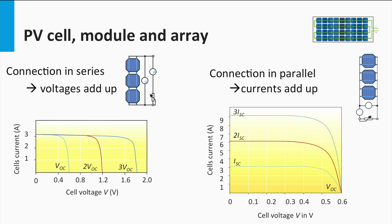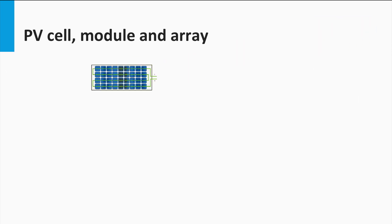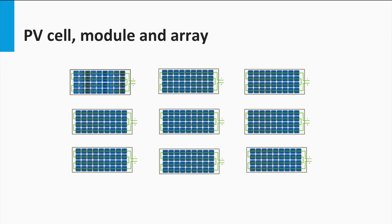A series or parallel interconnection of cells increases the voltage or current respectively, but the overall nature of the IV curve remains the same. In a similar manner, the interconnection of PV modules to form a PV array would yield comparable IV curves, albeit at different IV levels.